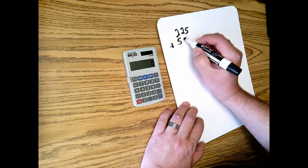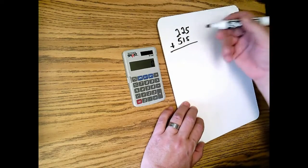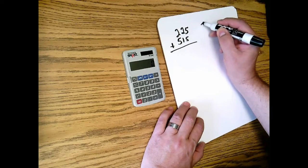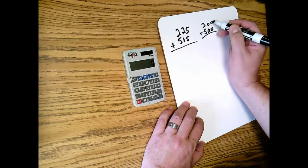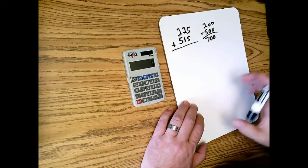So if I had 225 plus 515, of course what I could do is come up with an estimate and say that this is 200 and this is 500, and I know that 5 and 2 is 7. So I could say my estimate is about 700.